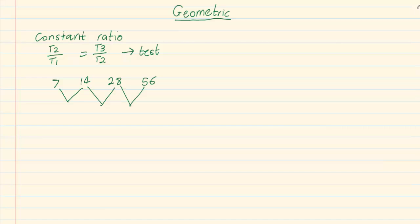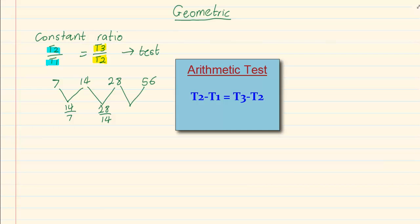Now if you do the test, 14 over 7 and 28 over 14. Can you see I am saying term 2 over term 1 and then I am saying term 3 over term 2. That is the major difference compared to arithmetic. In arithmetic we had term 2 minus term 1 is equal to term 3 minus term 2.